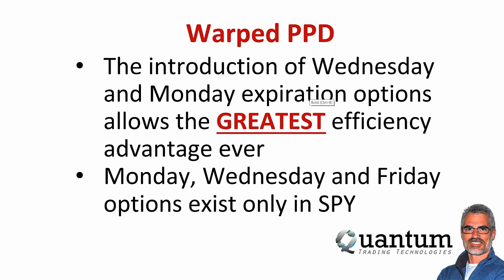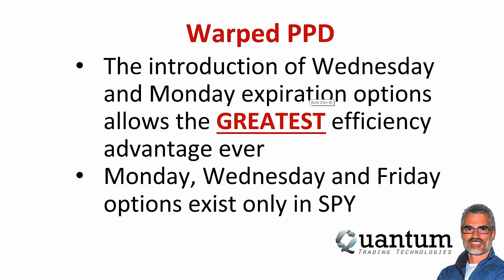There are many different ways to take advantage of this, but Monday, Wednesday, and Friday options only exist in SPY. You can take advantage of this in other stocks with weekly options using a seven-day and 14-day option, but with SPY you have much greater granularity in how you're able to take advantage of time decay.